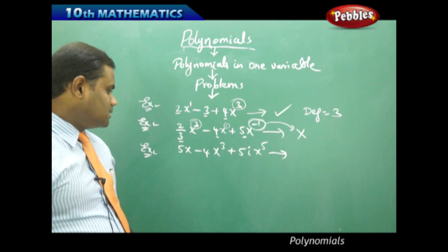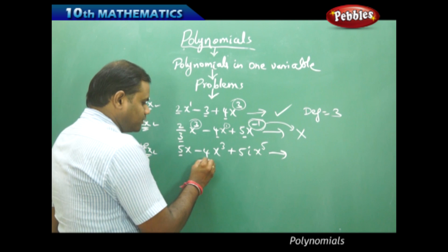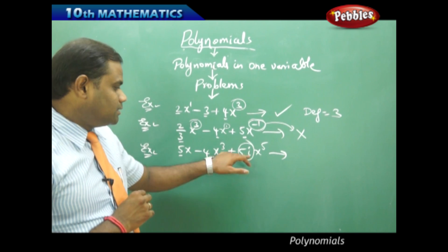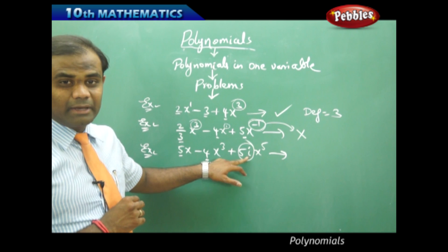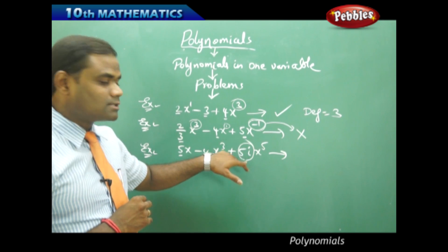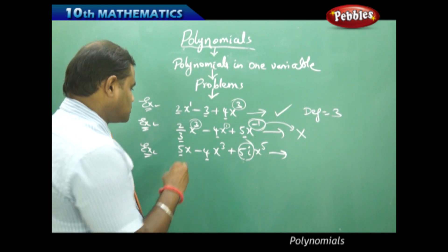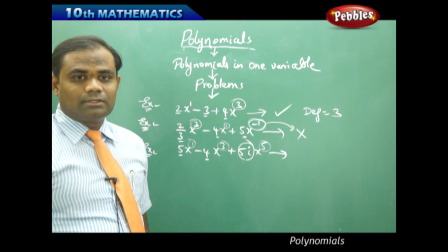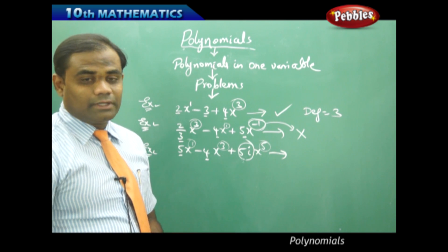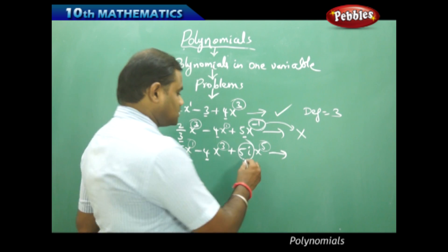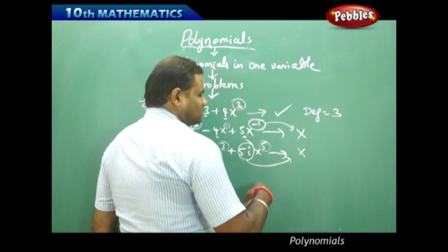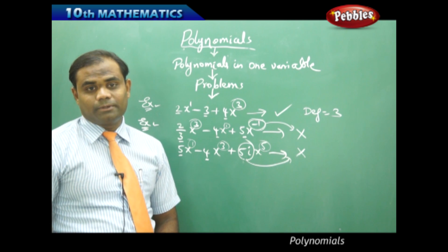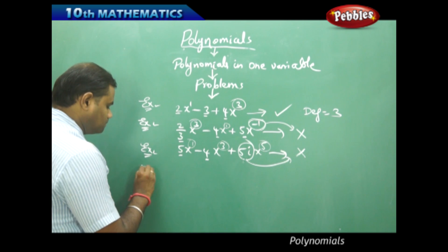This expression has all real coefficients except for one term, which has i as a coefficient. This i being an imaginary or complex number does not satisfy the real coefficients requirement. Although the powers are all non-negative integral powers, the given algebraic expression fails to be a polynomial because of the complex coefficient.